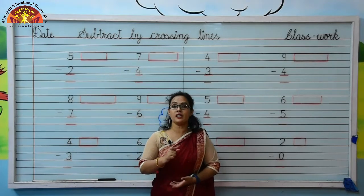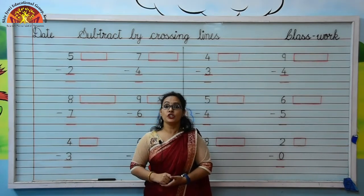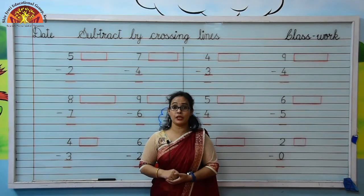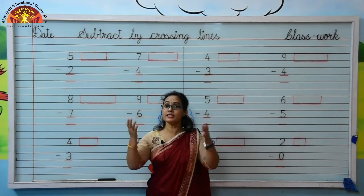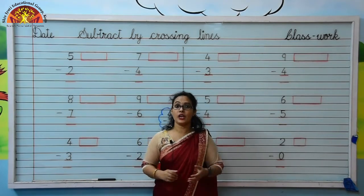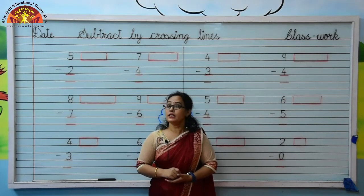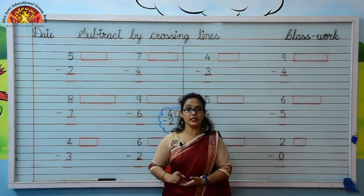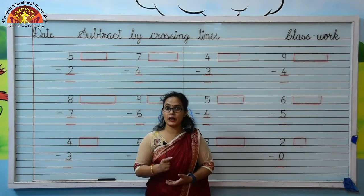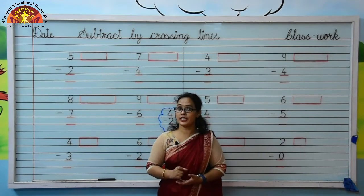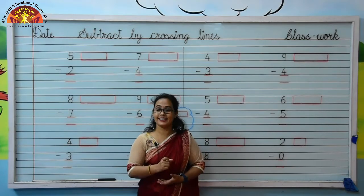Kids, in our last class we have done subtraction with 0. Do you remember what is the meaning of 0? Yes, 0 means nothing. When 0 is subtracted from any number, the difference is the number itself. Today we will do subtraction by crossing lines with 2 single digit numbers.